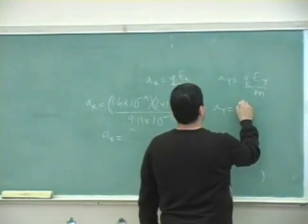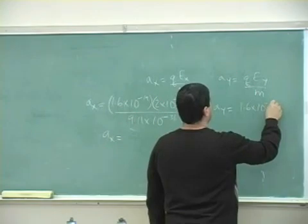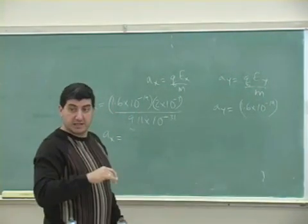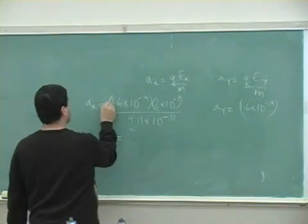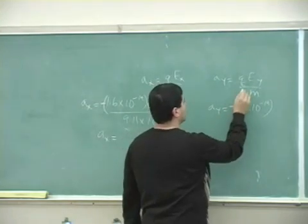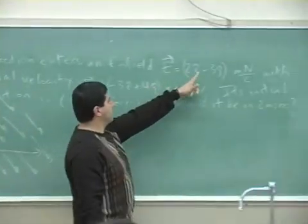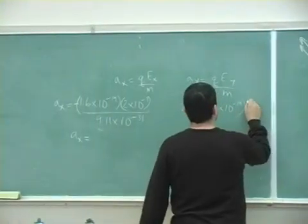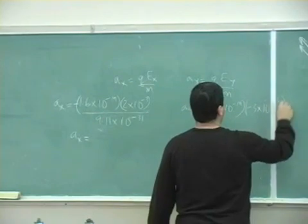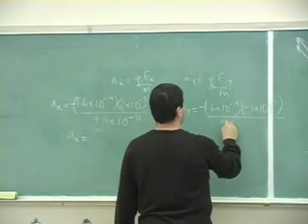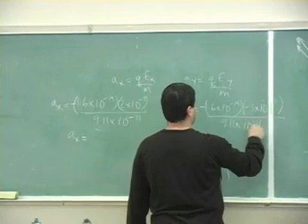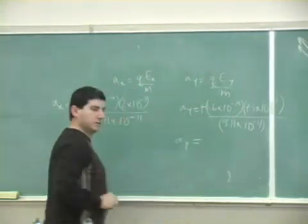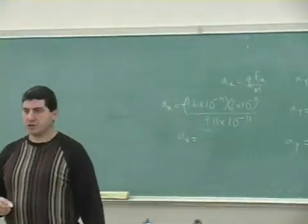For the x component, the charge should be negative 1.6 times 10 to the minus 19, since it's an electron. For the y component, the electric field is negative 3 times 10 to the minus 3, divided by 9.11 times 10 to the minus 31. The two negatives make a positive. So tell me what you get for each of those.